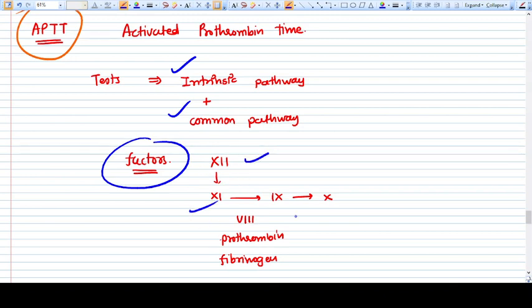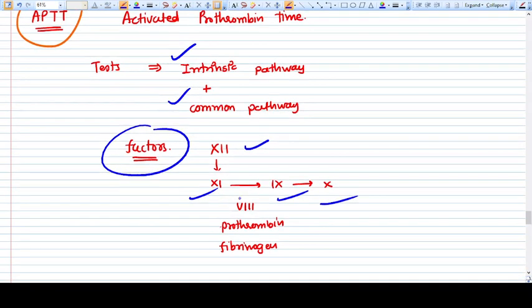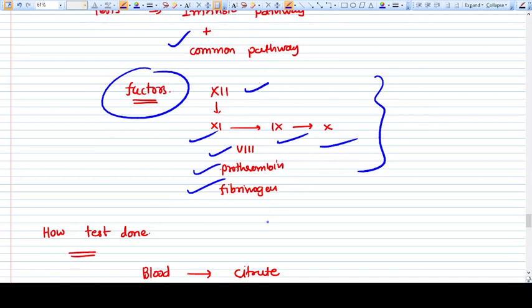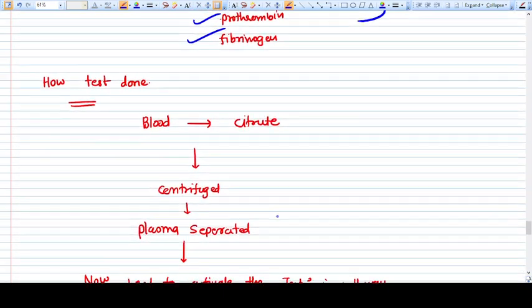What are the factors associated with the intrinsic pathway? Factor 12, 11, 9, 10, factor 8, prothrombin, and fibrinogen - all these factors are tested.